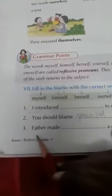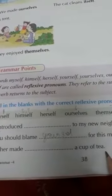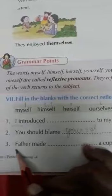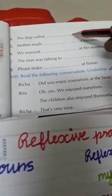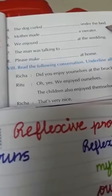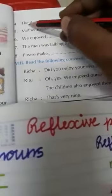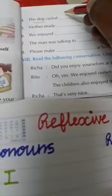Third one: father made blank a cup of tea. Father means 'he', so the answer is 'himself'. Fourth one: the dog curled blank under the bed. The dog refers to 'it', so the answer is 'itself'.